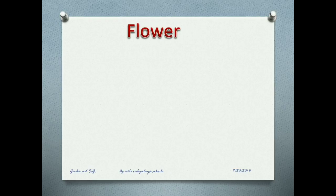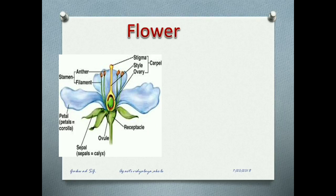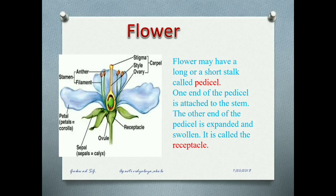Next is flower. Look at the diagram — there are a few parts of a flower. A flower may have a long or short stalk called the pedicel. One end of the pedicel is attached to the stem. The other end of the pedicel is expanded and solemn — it is called the receptacle.